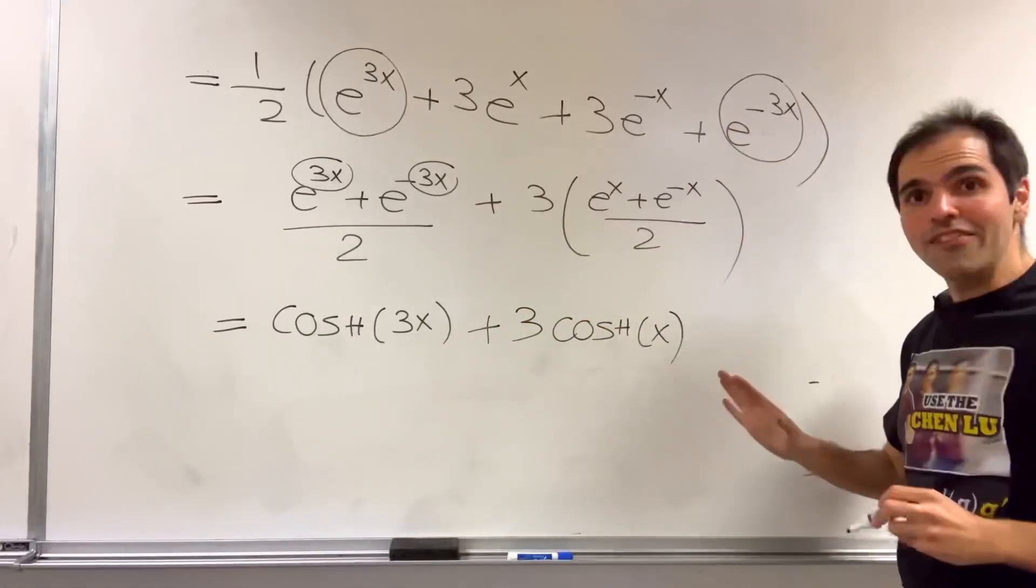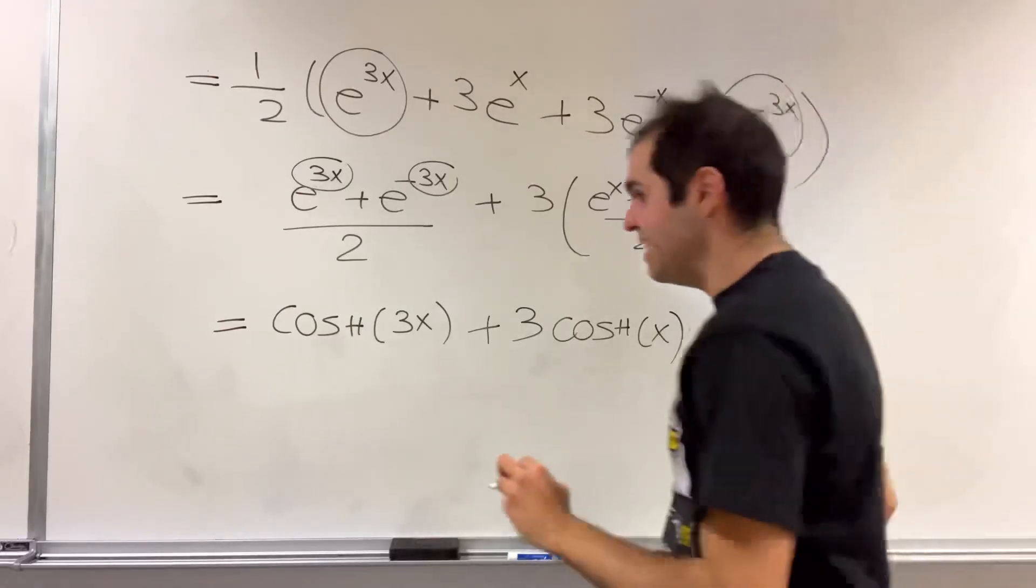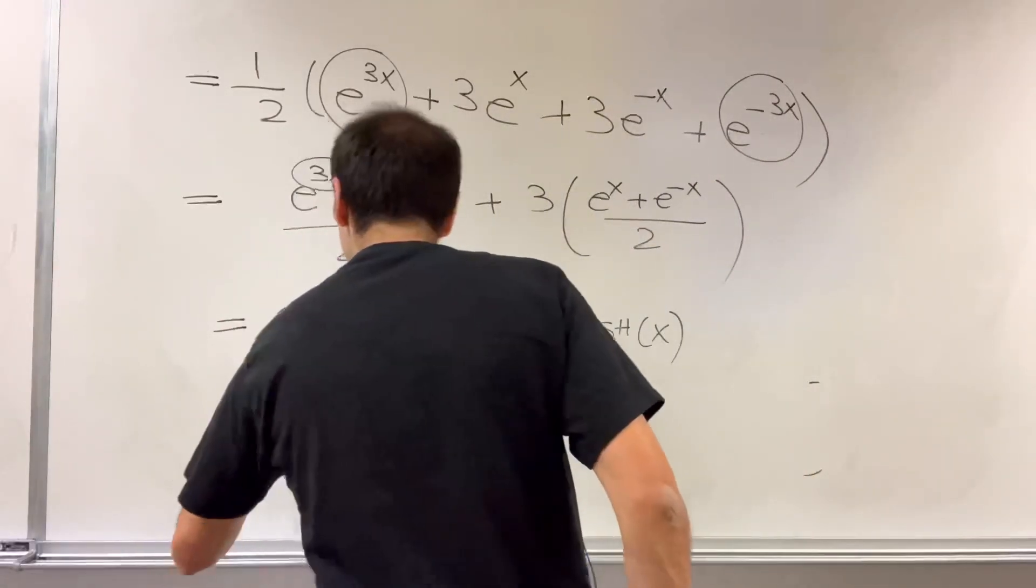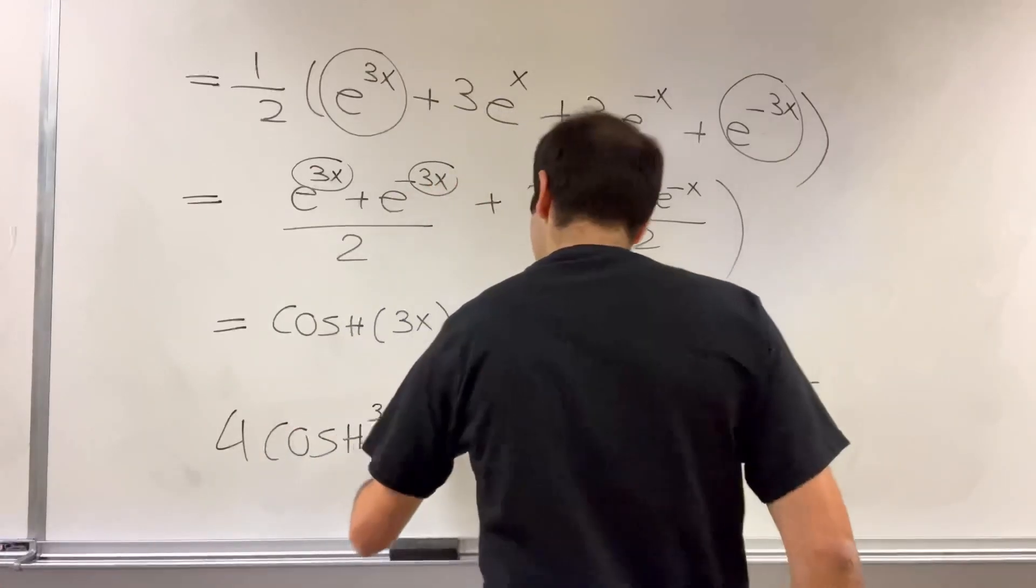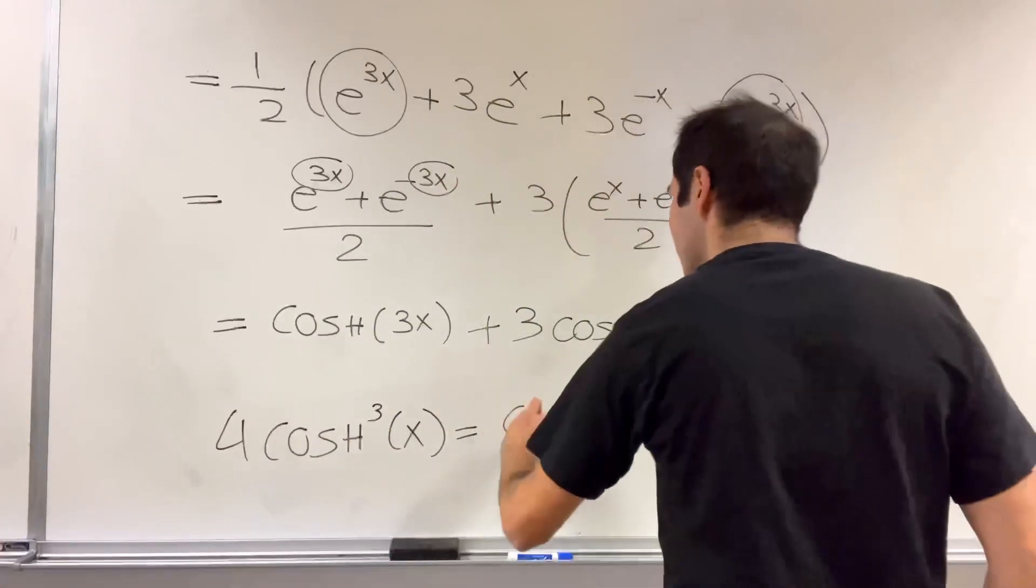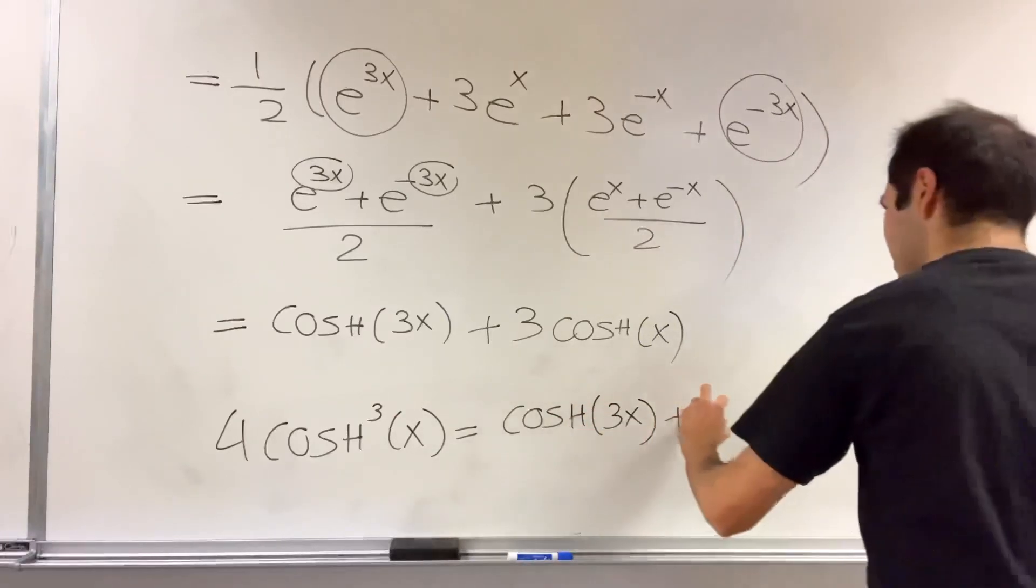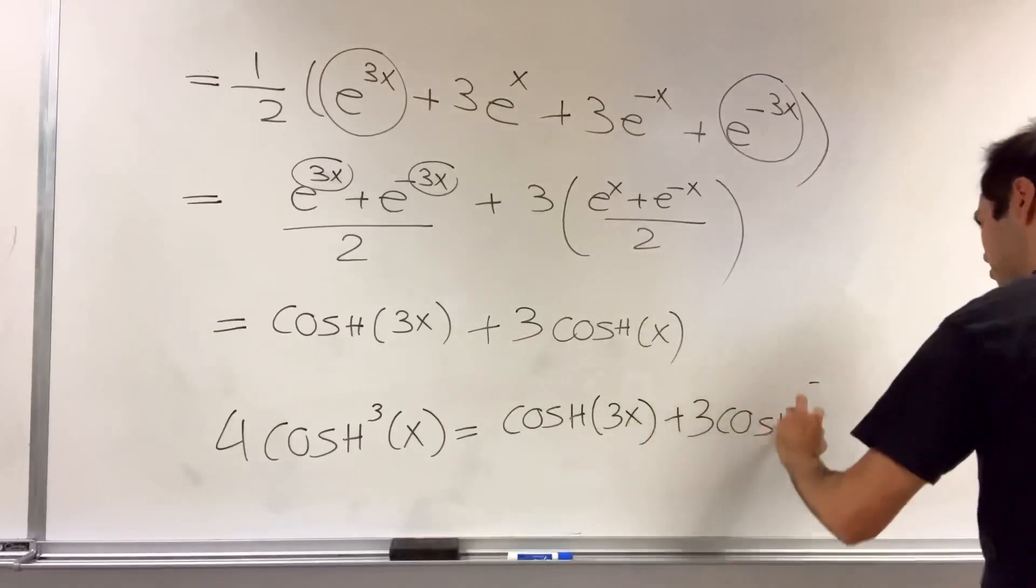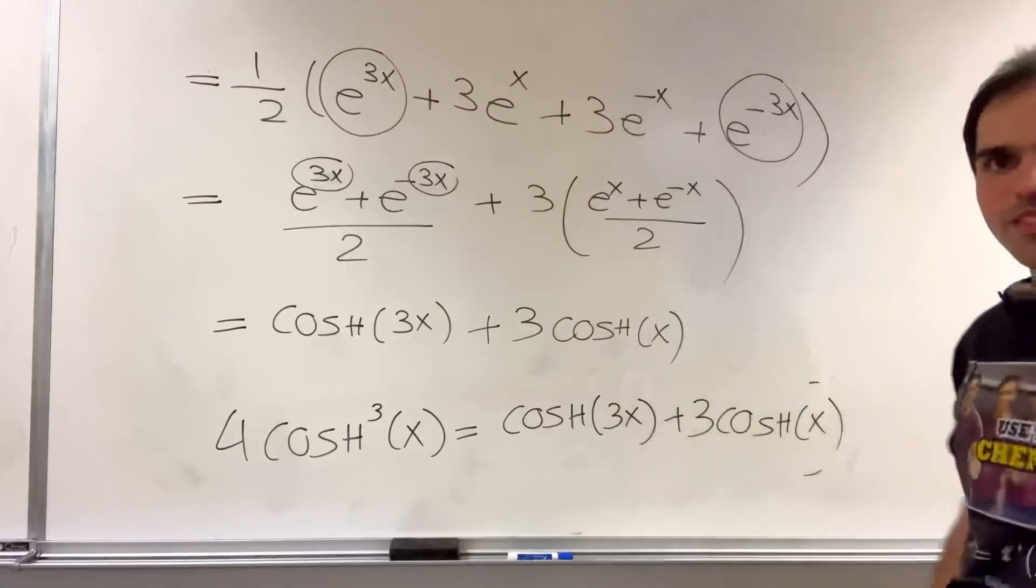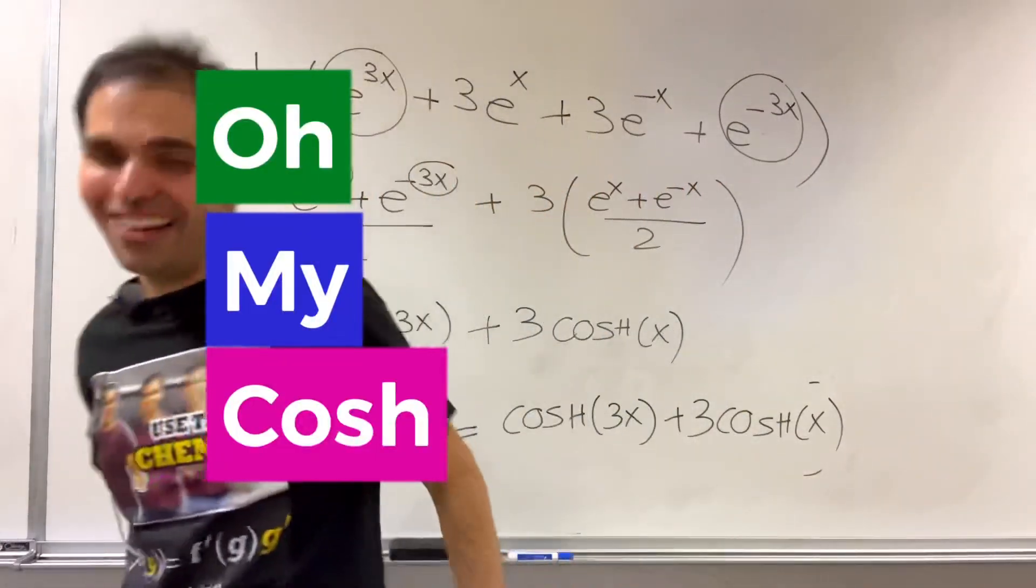So what have we shown? We've shown that indeed, 4 cosh cubed of x is the same thing as cosh of 3x plus 3 cosh of x. Oh my cosh!